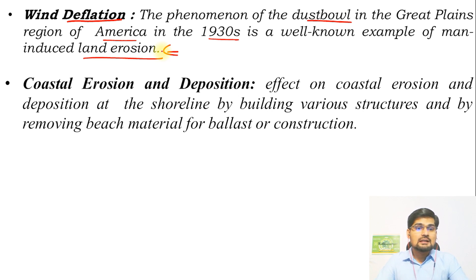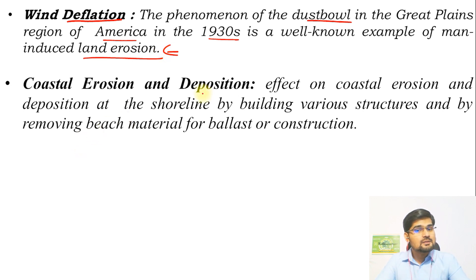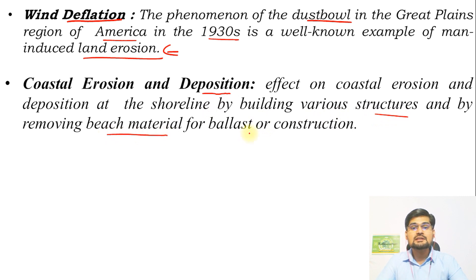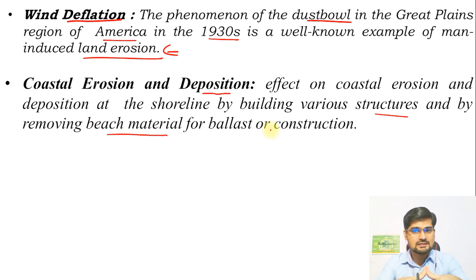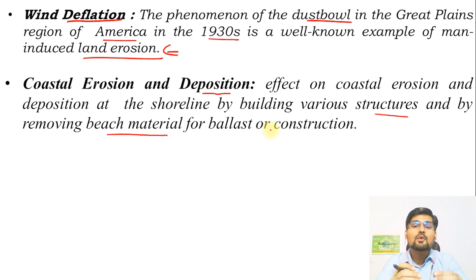The same happens in today's world — aridity is increasing in many parts of India, specifically northwestern India, where we have several dust storms. Then there is coastal erosion and deposition: the coastal areas we are manipulating according to ourselves, changing the natural shoreline by building various structures, removing beach material for construction, port, and business activities. The major idea is we are modifying natural landforms — that is the point to remember.